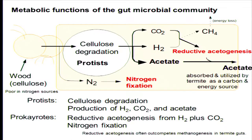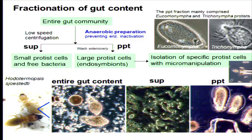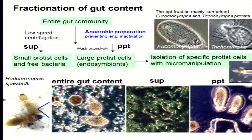We focused on these two activities — reductive acetogenesis and nitrogen fixation — and applied a fractionation strategy of gut content. Using low-speed centrifugation, we fractionated gut content into two fractions: one is a large protist cells fraction, and the other is a small protist and free bacteria fraction. These fractions were prepared anaerobically. The large protist fraction mainly comprised Eucomonympha and Trichonympha protist cells.